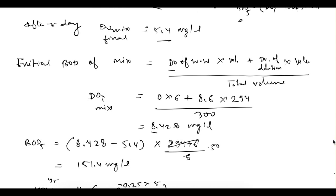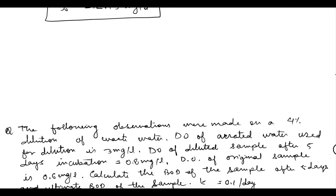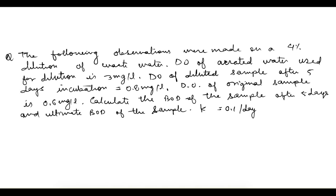So this question was to show how to find out the initial DO of the mix using this formula. Now the next question says: the following observations were made on a 4% dilution of wastewater. 4% dilution means 4% is wastewater and 96% is dilution water.